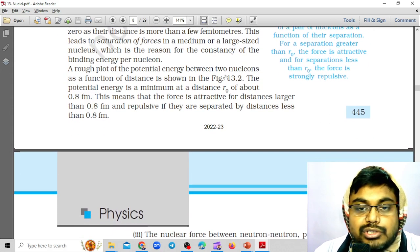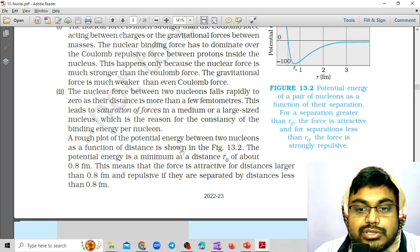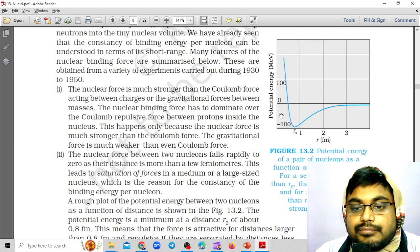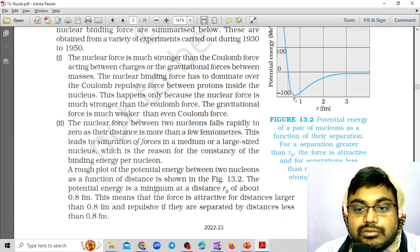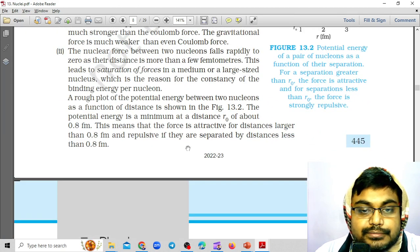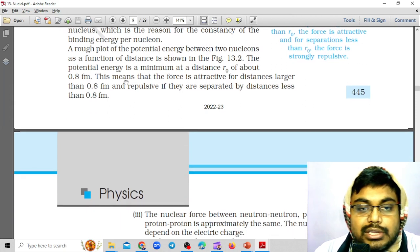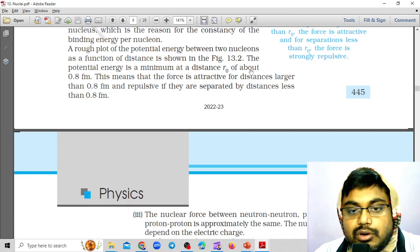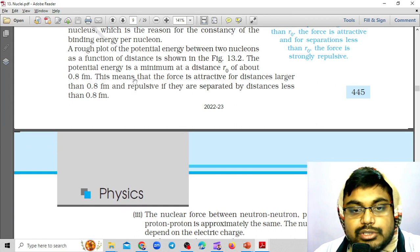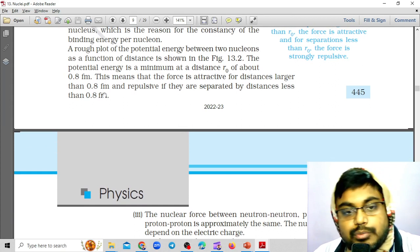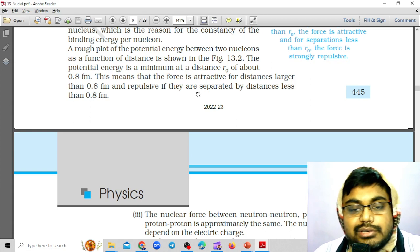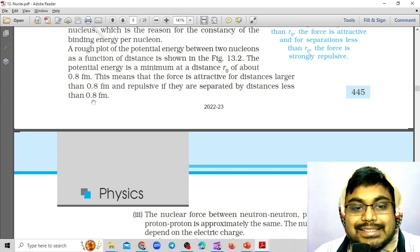A rough plot of the potential energy between two nucleons as a function of distance is shown. The potential energy is a minimum at a distance r naught of about 0.8 fm. This means that the force is attractive for distances larger than 0.8 fm and repulsive if they are separated by distance less than 0.8 fm.